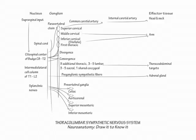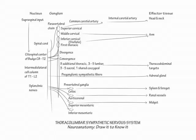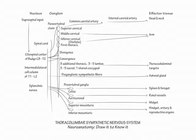The celiac ganglion innervates the spleen and foregut derivatives. The aorticorenal ganglion innervates the renal vessels. The superior mesenteric ganglion innervates the midgut derivatives. These are also the target organs of the parasympathetic branches of the vagus nerve and the S2–S4 sacral spinal cord intermediolateral cell column, which demonstrates that most visceral targets receive opposing parasympathetic and sympathetic innervation.